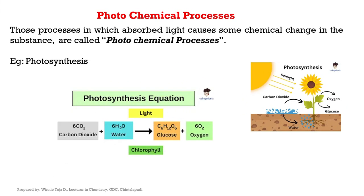Coming to the photochemical process: those processes in which absorbed light causes some chemical change in the substance. If a substance absorbs light and is converted to a different substance, that means there is a chemical change. That process is called a photochemical process. An example is photosynthesis.